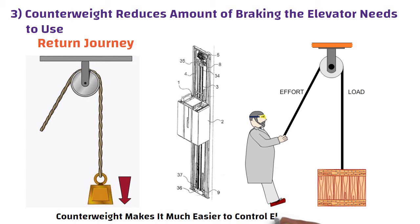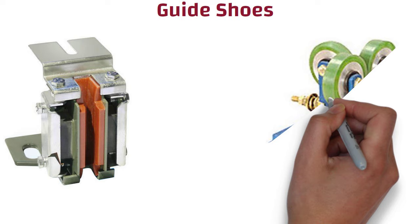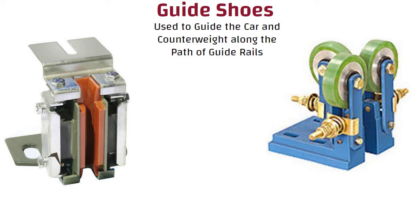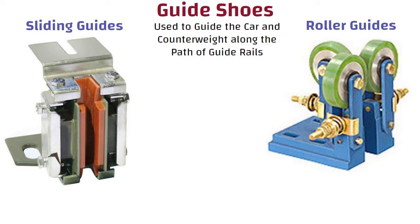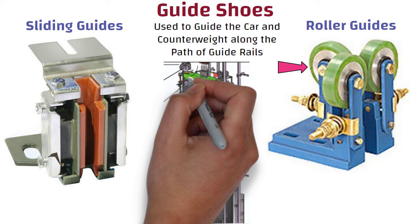Guide shoes are devices used to guide the car and counterweight along the path of the guide rails. There are two types of guide shoes: one, roller guide shoes, and two, sliding guides. Roller guides use rollers that rotate on guide rails — they have a set of three wheels that roll against the guide rails. You can see roller guide shoes on rails in this picture.